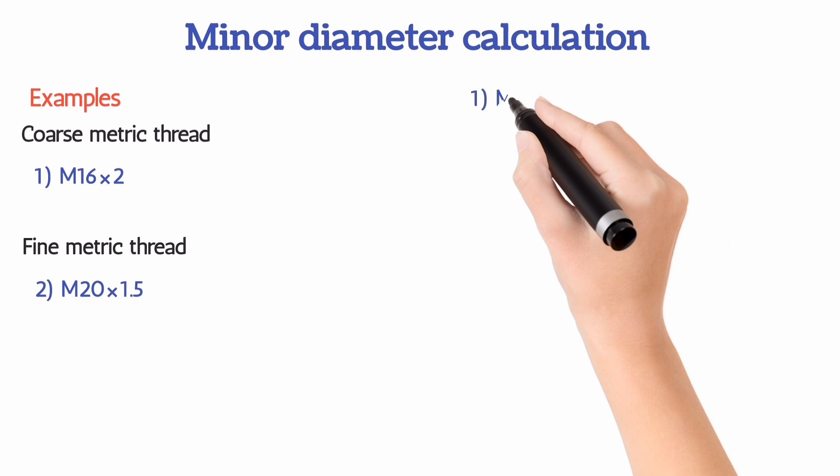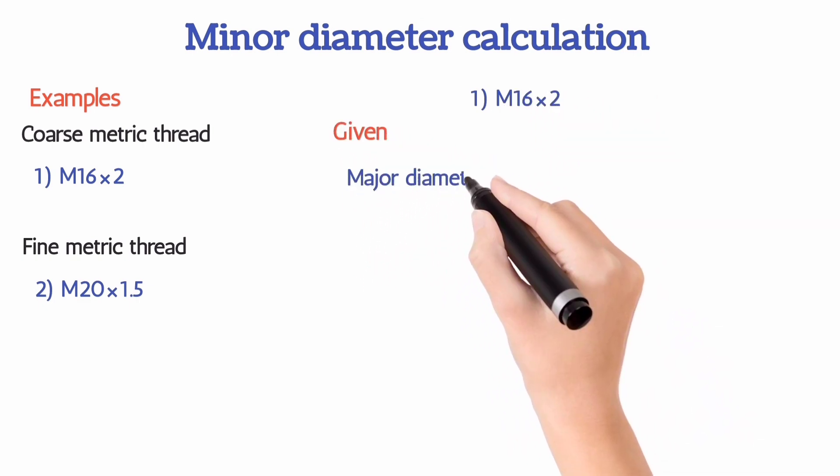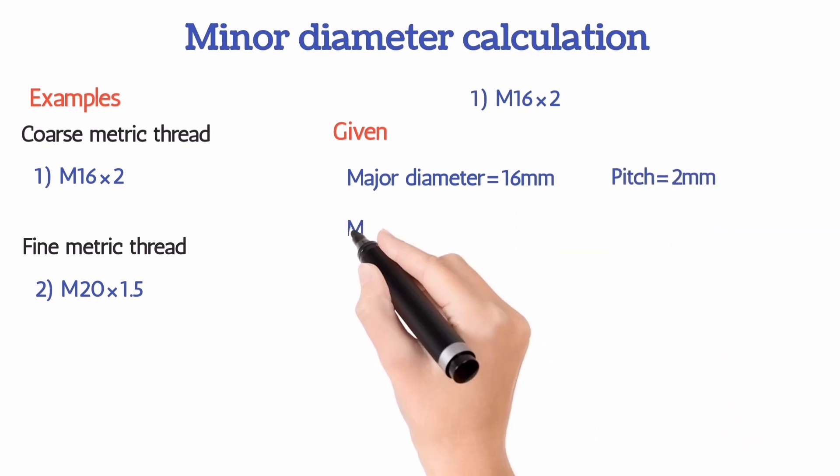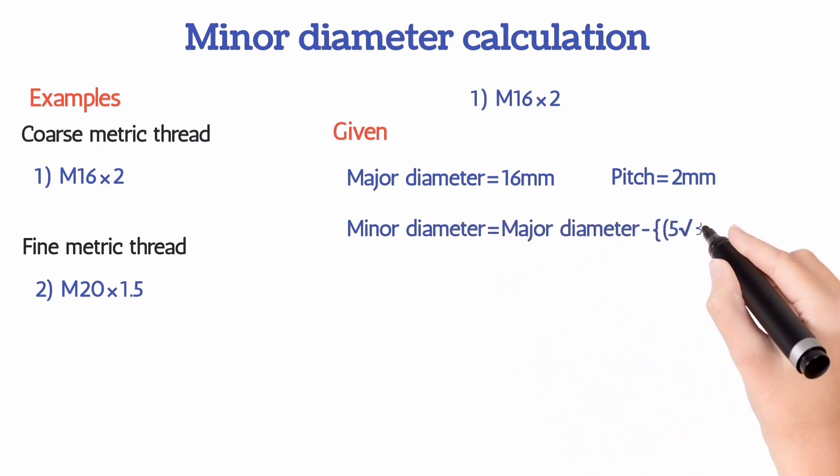Take first example, that is M16 times 2. Here major diameter is 16mm, pitch is 2mm. We know the formula: minor diameter is equal to major diameter minus 5 times root 3 times pitch divided by 8.